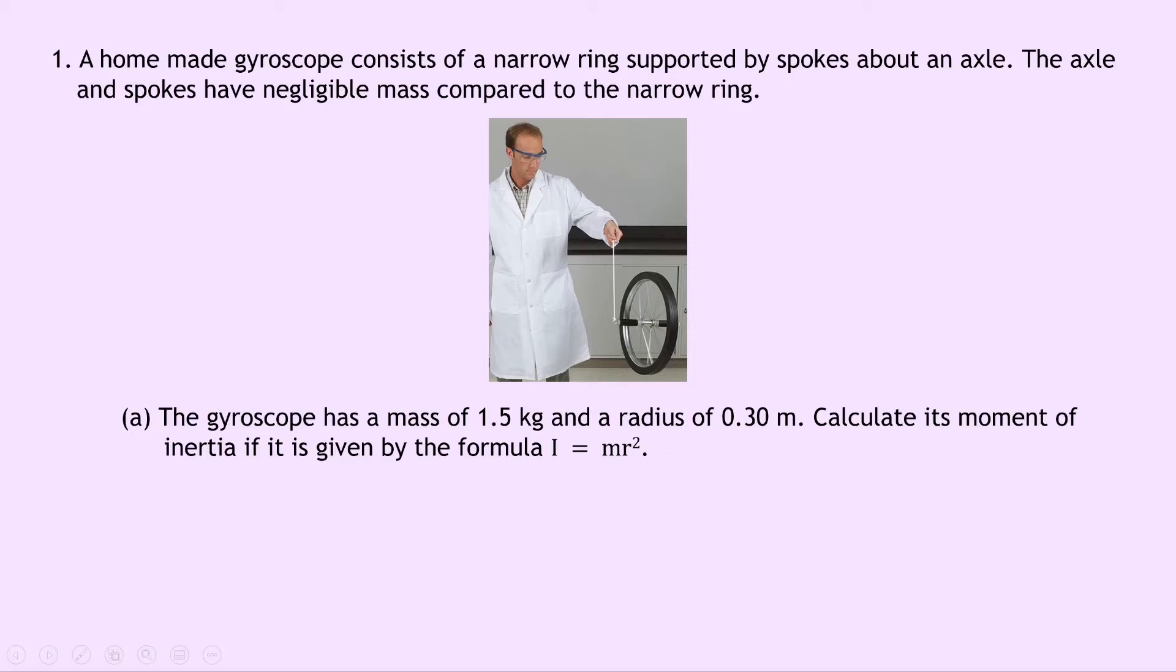So writing down what we know from the question, we're trying to find the moment of inertia of the ring. The mass is 1.5 kg and the distance from the axis of rotation of the ring, which is going to be the centre where it rotates around, is 0.30 m. That's the same as the radius of the ring. So writing down our equation, we have I = mr². And substituting in the numbers, we have 1.5 × 0.30². And putting that into your calculator should give you an answer of 0.14 kgm².